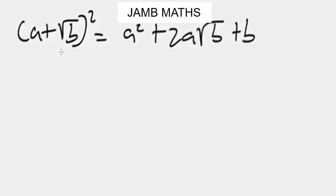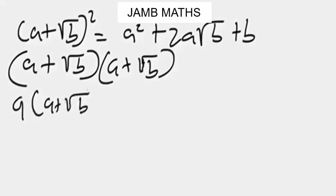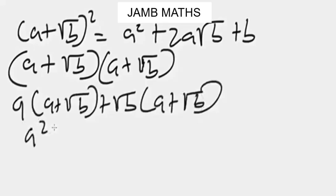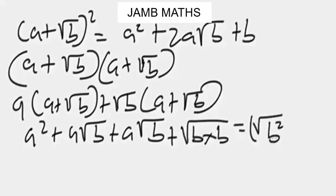Let me show you how we got this, just like in factorization of algebraic expressions involving the difference of two squares. If we break this down: a plus square root of b, times a plus square root of b. Expanding: a times a plus square root of b, plus square root of b times a plus square root of b. This gives us a squared plus a square root of b plus a square root of b plus square root of b times square root of b. Using Rule 1, square root of b times square root of b equals square root of b squared, and the square cancels the square root.